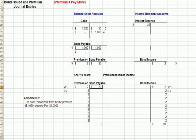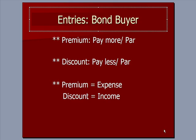That perspective is going to be different. For the bond buyer, a premium means you, the buyer, are going to pay more; a discount means you, the buyer, are going to pay less. So if you pay more, the premium to the buyer is going to be an additional expense — you paid more. The discount is going to mean income to the buyer — you paid less.